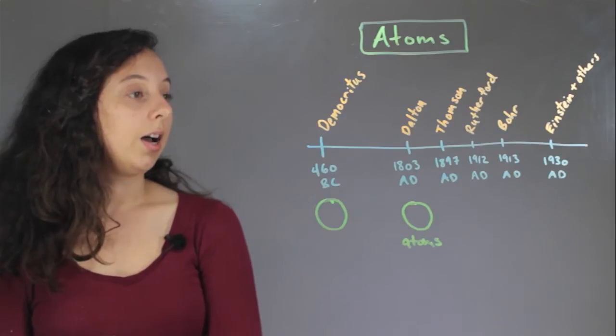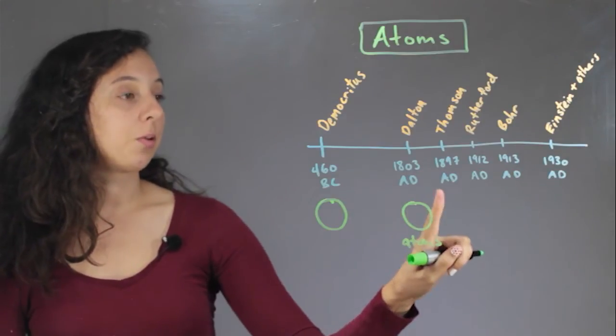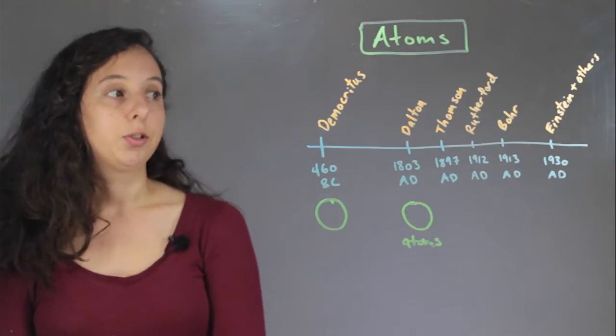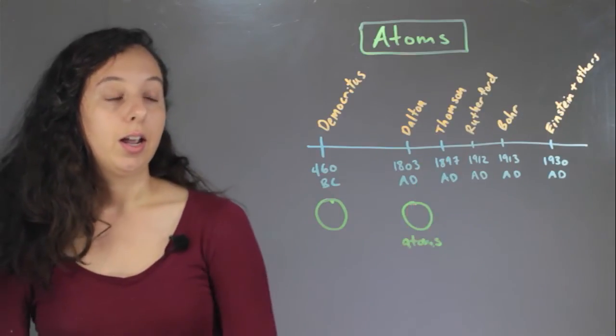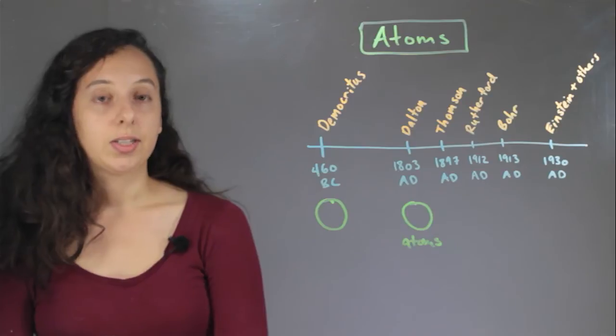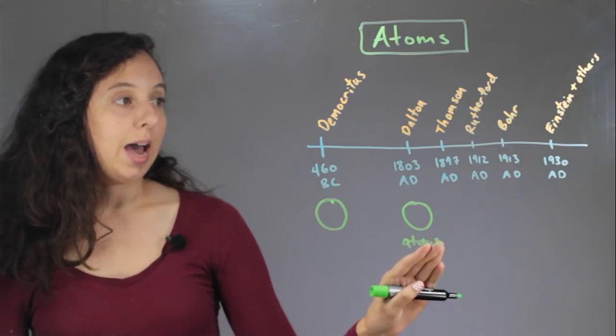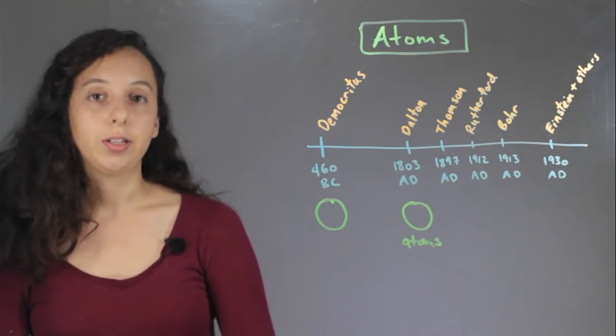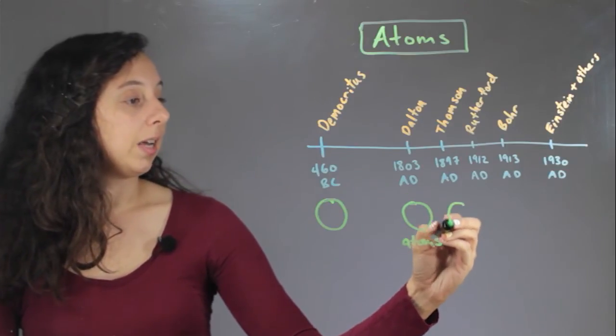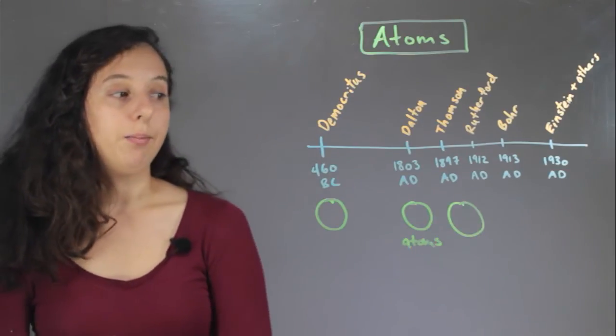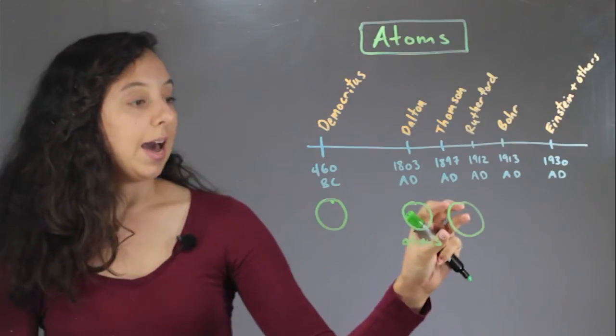So, almost a hundred years had to pass before the next major discovery, which was made by a scientist named Thompson, and what he discovered was that atoms actually had charges. And so he discovered that overall was neutral, but there was positive charges and negative charges in the atom.